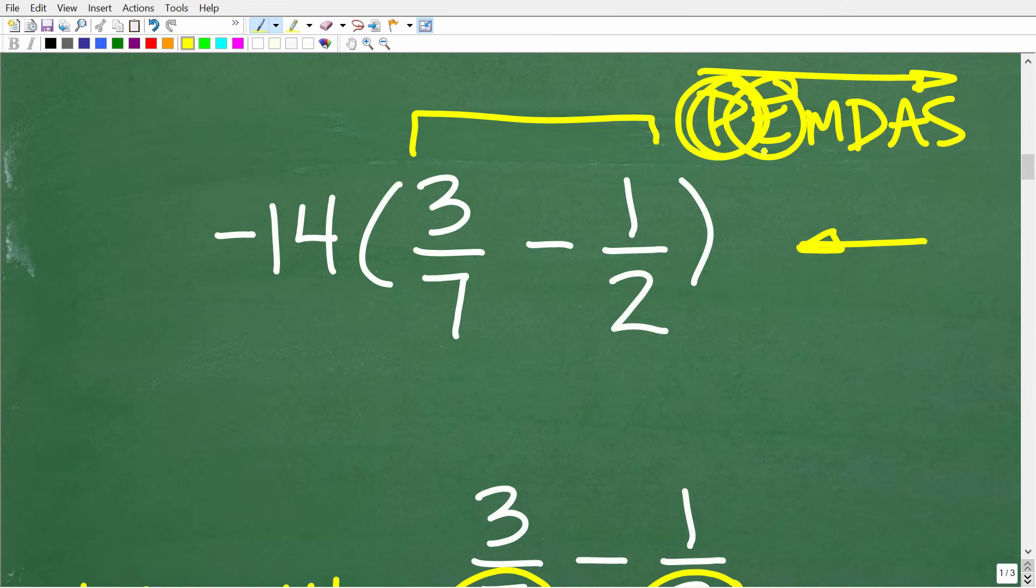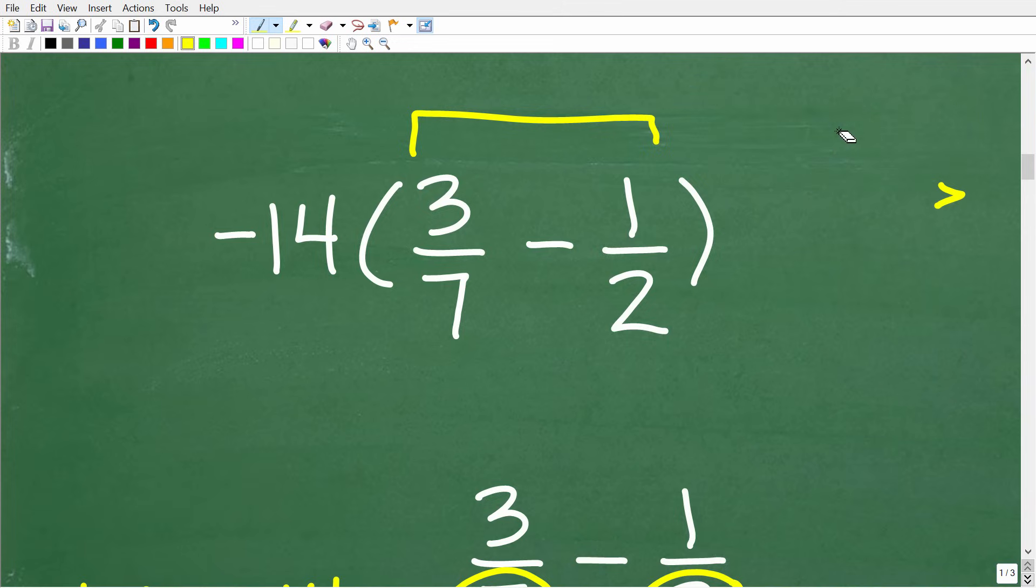P stands for parentheses or grouping symbols. So you have to do this first. And then E stands for exponents or powers. Then M and D stands for multiplication and division. We'll do any multiplication and division, whatever we see first from left to right. And then any addition and subtraction last, whatever we see first from left to right.